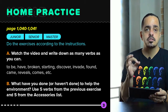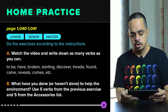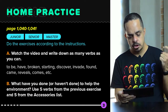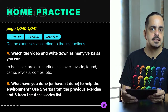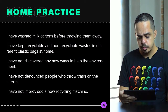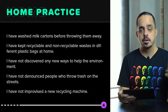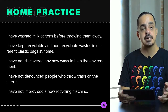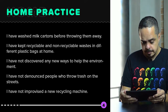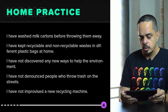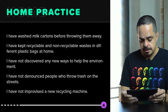After that, you have to tell me what you have done or haven't done to help the environment. Use five verbs from the previous exercise and five from the accessories list. Some examples: I have washed milk cartons before throwing them away. I have kept recyclable and non-recyclable waste in different plastic bags at home. I haven't discovered any new ways to help the environment. I haven't denounced people who throw trash on the streets. Or I haven't improvised a new recycling machine.